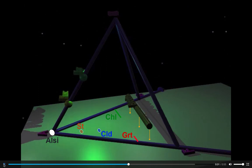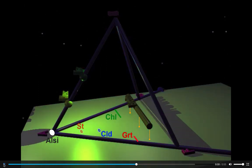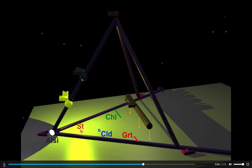It's on the FM join. If we switch to projection from muscovite, however, biotite's shadow falls outside the AFM triangle.